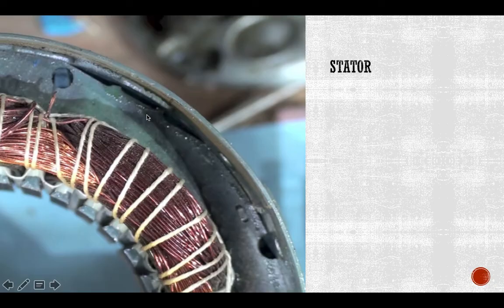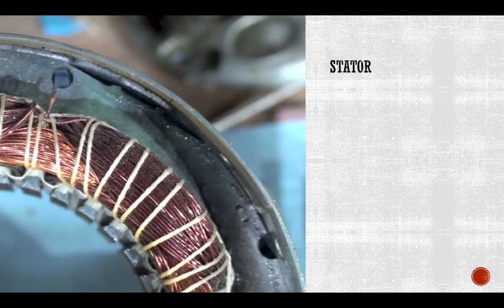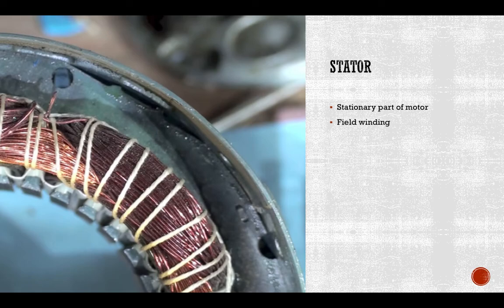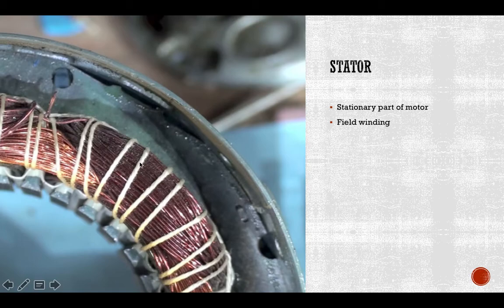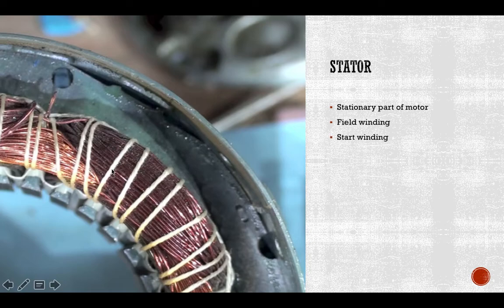So I'm going to talk about how the motor looks like in real life application. So this is an example of a stator. Stator is a stationary part of the motor. So first I'll talk about the field winding. This is a field winding that is also a start winding. So it's darker in color and is larger in diameter and more coil of it.